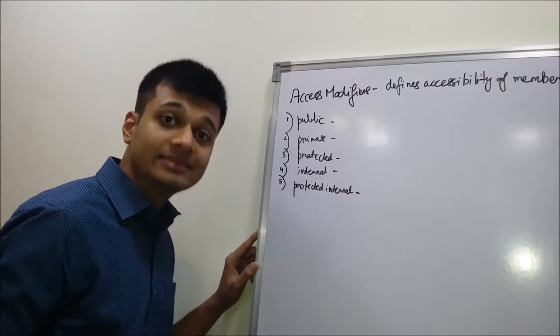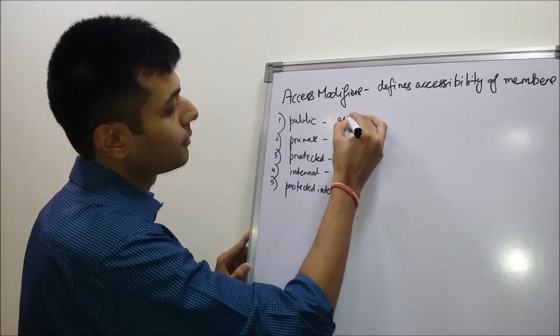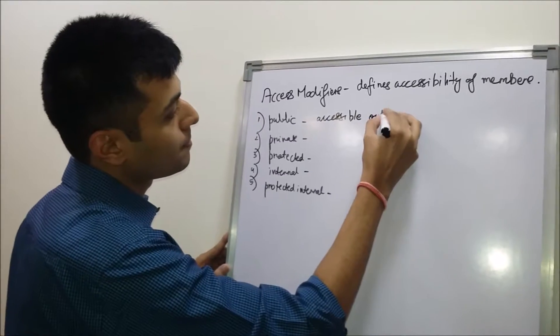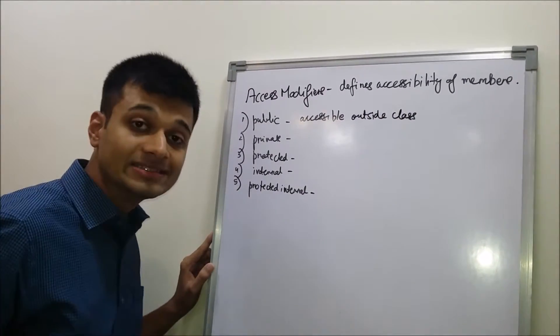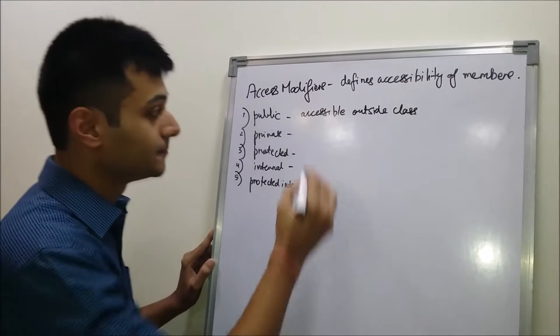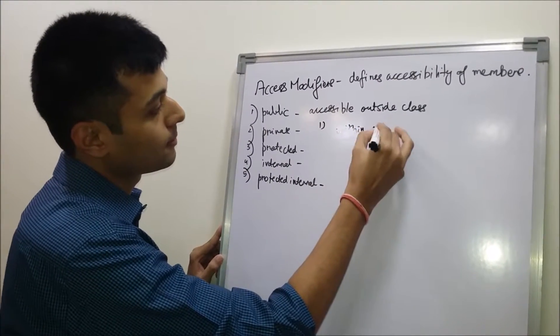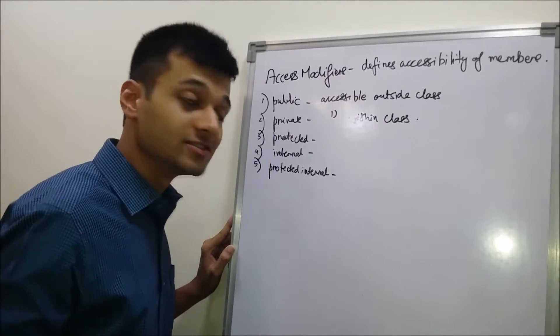Public means it is accessible even outside the class. Private means it is accessible within the class. Protected means it is accessible within the derived classes.